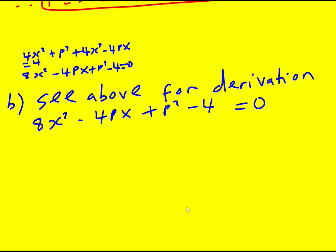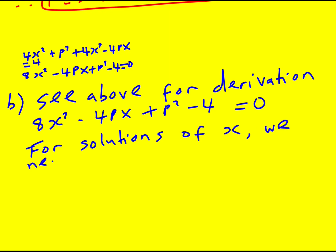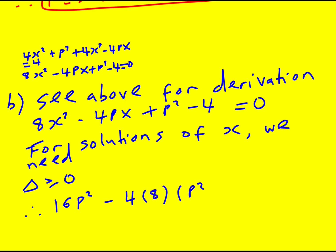It's going to work along similar lines. The discriminant is 16p squared minus 4 times 8 times the quantity p squared minus 4, and this must be greater than or equal to 0. We now have an inequality in terms of p squared.